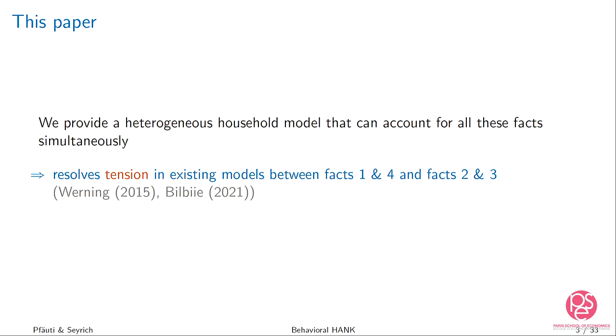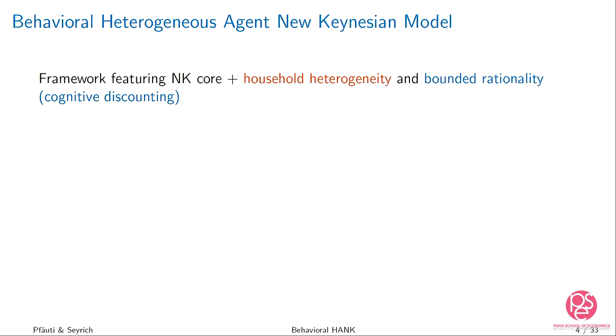We keep the New Keynesian core structure but allow for household heterogeneity in incomplete markets and bounded rationality in the form of cognitive discounting. This results in what we call the behavioral heterogeneous agent New Keynesian model, or simply the behavioral HANK model.